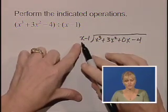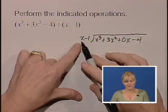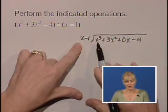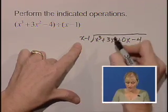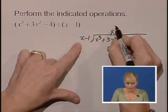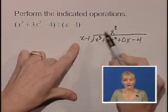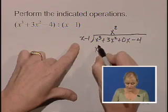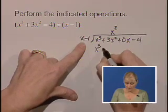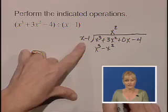Long division focuses around the x term, this first piece of our binomial. We're going to take x into x cubed and that goes in x squared times. So we're going to place it right above the x squared, kind of in the x squared column, and now we're going to multiply. x squared times x is x cubed. x squared times a negative 1 is minus x squared.